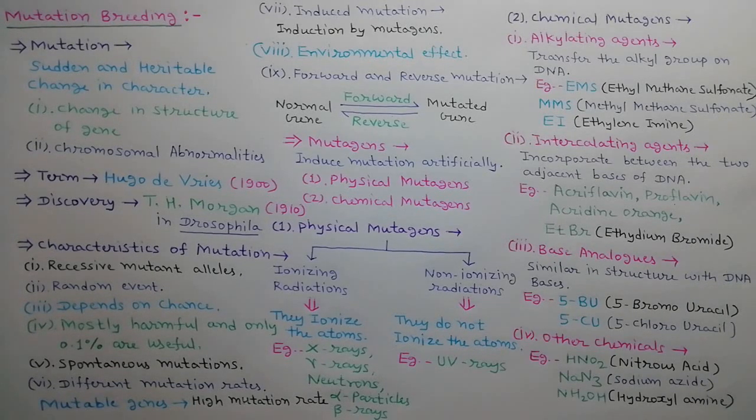Some other chemicals are also used as mutagens, such as nitrous acid, sodium azide, and hydroxylamine.